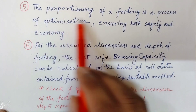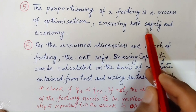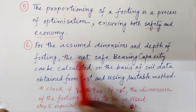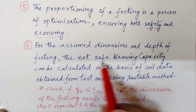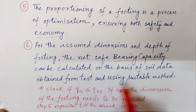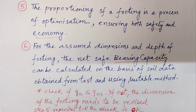The proportioning of a footing is a process of optimization ensuring both safety and economy. For the assumed dimension and depth of footing, the net shape bearing capacity can be calculated on the basis of soil data obtained from tests using a suitable method. The proportioning of a footing is a problem which is interactive in nature. The typical structural engineer's approach of obtaining the plan dimension by dividing the column load or wall load by the bearing capacity cannot be used here.